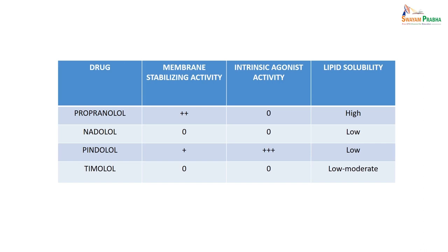Looking at intrinsic sympathomimetic action, membrane stabilizing activity, intrinsic agonist activity, and lipid solubility — it is very important to understand how many beta blockers can penetrate the CNS, based on lipid solubility. You can make a comparative evaluation of propranolol, nadolol, pindolol, and timolol. Lipid solubility is low to moderate in the case of timolol.